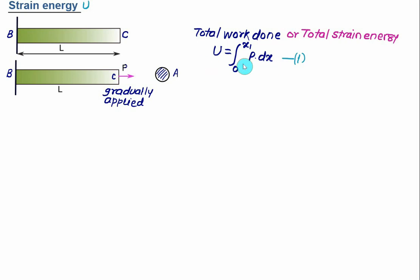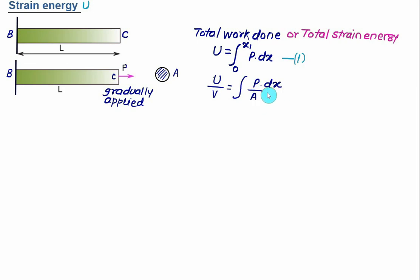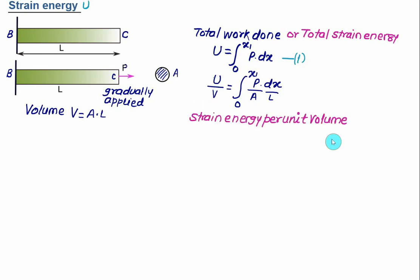Dividing strain energy by volume V, where V = A × L (cross-sectional area times length), we get U/V = integral from 0 to x₁ of (P dx)/(A·L). This term is called the strain energy density — strain energy per unit volume — represented by lowercase u.